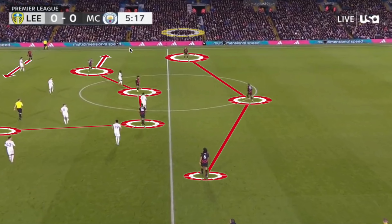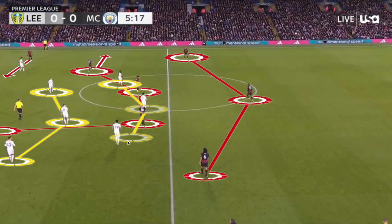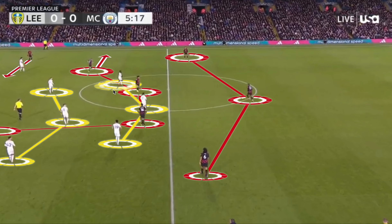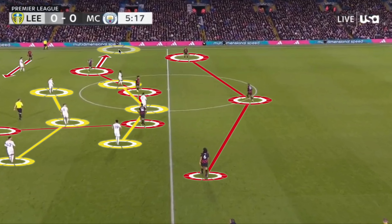Leeds were able to maintain their horizontal and vertical compactness. When they shifted across into the wide area, they matched up well against Manchester City, who didn't have too much success finding Kevin De Bruyne in wider areas during their offensive organization phase.